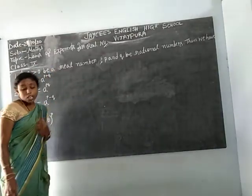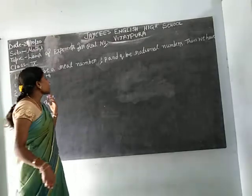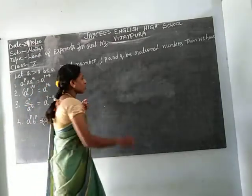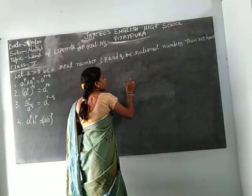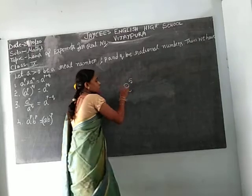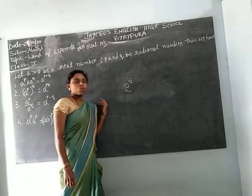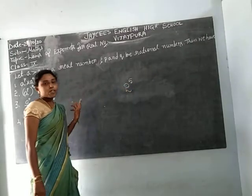Exponents — another name for exponents is power. For example, 2 to the power of 5. Here 2 is the base and 5 is the exponent. You already learned this in previous classes.